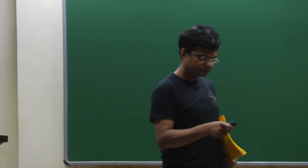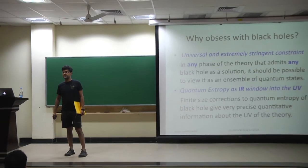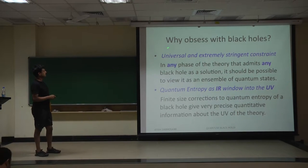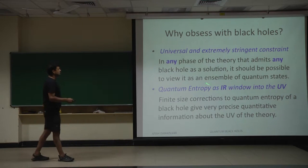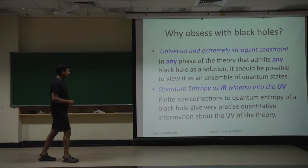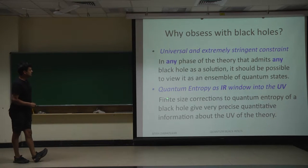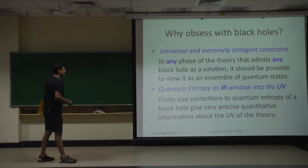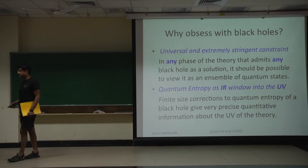Today I will start with the transparencies and then switch to the blackboard. Just to recapitulate: one of the reasons why we continue to obsess with black holes is that this is a very universal and extremely stringent constraint. Any phase of a theory that admits black holes should be interpretable as an ensemble of quantum states. If you develop methods to study the quantum entropy of black holes and can compute it, it provides an infrared window into the ultraviolet structure of the theory. Finite-size corrections to the quantum entropy give us very precise quantitative information about the UV. That's the motivation.